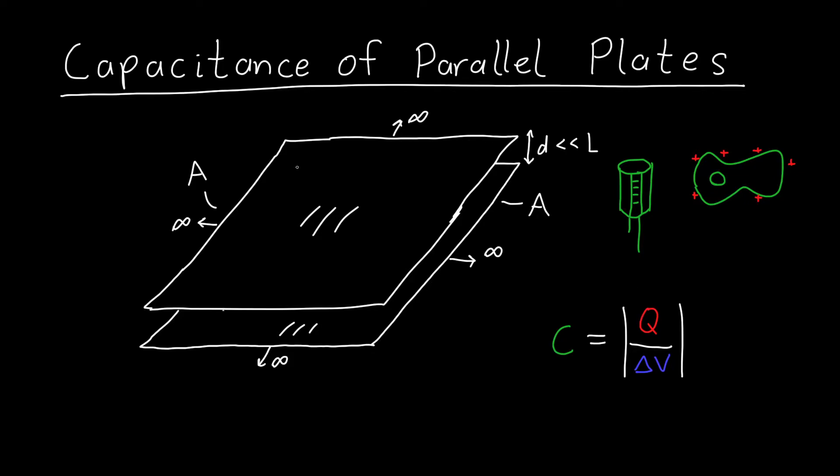And to find the capacitance we first put a charge of Q on one of these plates. So let's say that the total charge on this top plate is plus Q, and I'm going to have an equal and opposite charge on the other plate of minus Q. So I already know one of the things in my capacitance equation, I already have the charge. The difficult part is finding what this delta V is, and that's going to be most of this problem.